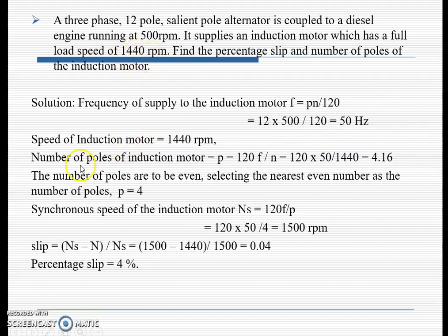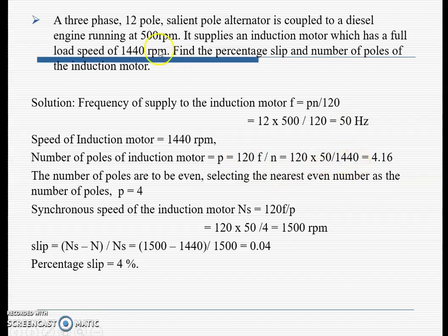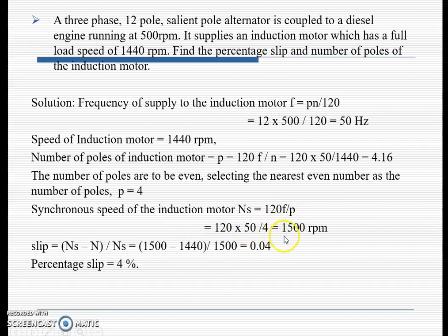The speed of the induction motor is given as 1440 rpm. The 12 poles belong to the diesel engine running at 500 rpm. For the induction motor, the number of poles is P = 120f / n = 120 × 50 / 1440 ≈ 4.17. Since the number of poles must always be even, rounding off gives P = 4. The synchronous speed for the induction motor is then n_s = 120 × 50 / 4 = 1500 rpm.